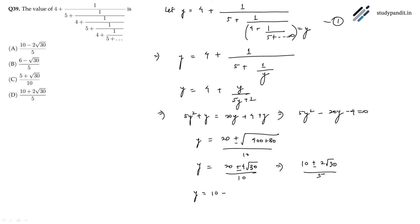So y equals 10 plus 2 root 30 divided by 5, so D is the correct answer.